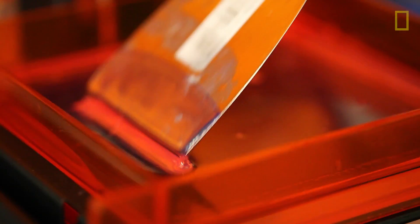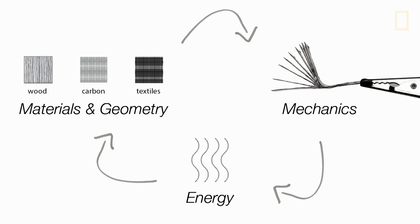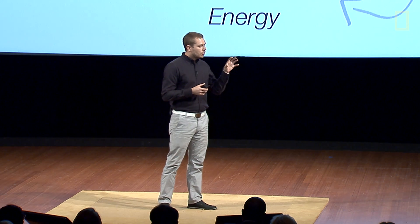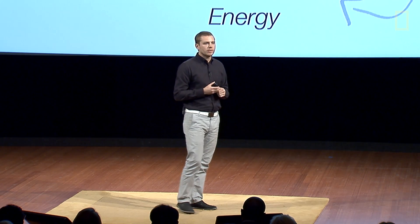The other category of research we look at is how to program physical materials to change shape and property on demand. On the top left is our materials and geometry. Everything we know in the physical world is made out of materials and geometry. Each one of those responds to different types of energy.